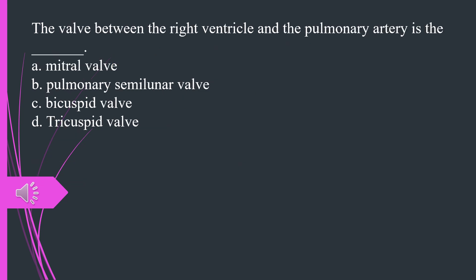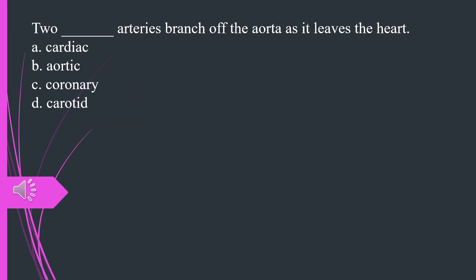The valve between the right ventricle and the pulmonary artery is the A. Mitral valve B. Pulmonary semilunar valve C. Bicuspid valve D. Tricuspid valve. The answer is B, pulmonary semilunar valve.